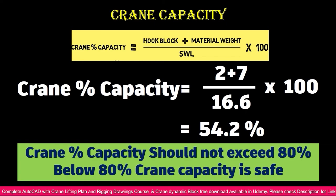The percentage of crane capacity should not exceed 80%. Below 80%, crane capacity usage is safe. If it exceeds 80%, you may face difficulties during lifting due to factors like atmospheric conditions, temperature, and wind. Keeping the capacity below 80% prevents accidents. In this example, we are using only 54% capacity, leaving a safe margin. This is the proper way to create a crane lifting plan before making the drawing.